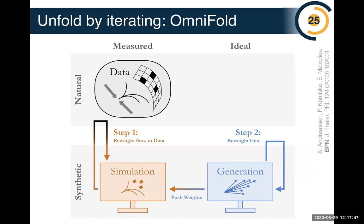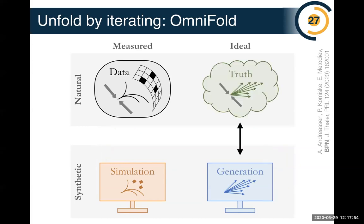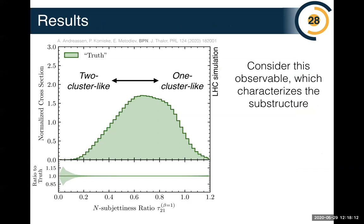We can repeat this procedure many times — pushing weights forward, pulling them back — and at the end after iterating we have a weighted particle-level spectrum that corresponds to our best estimate of the truth. Once we have that, we have a full phase space unfolding and can compute whatever observables we like afterward.